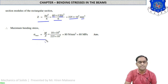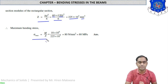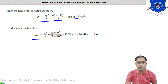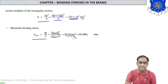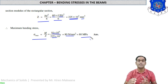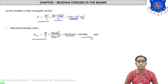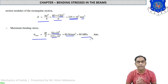Maximum bending stress sigma max = M/Z, which is our final formula from the flexure equation. Substituting: M = 18 × 10⁶ N·mm and Z = 225 × 10³ mm³. Solving gives sigma = 80 N/mm², which means 80 MPa. This is the bending stress at both the uppermost and lowermost sections of the beam.